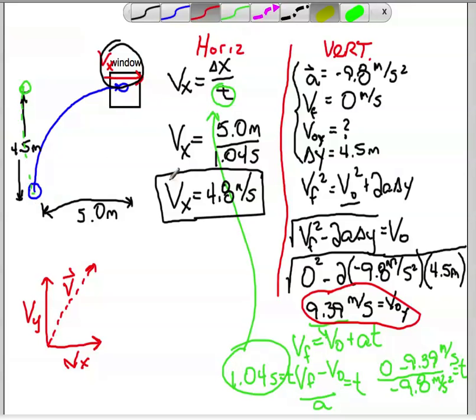But ultimately, this question simply asks, what's the horizontal component of velocity, or more specifically, they ask, with what velocity does it reach the window? This 4.8 meters per second doesn't change throughout the entire interval here, so it's got a 4.8 meter per second horizontal component of velocity throughout its path.